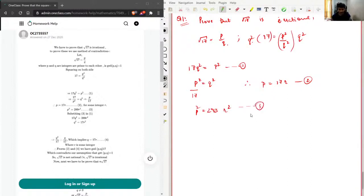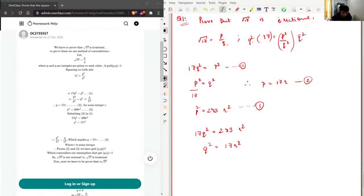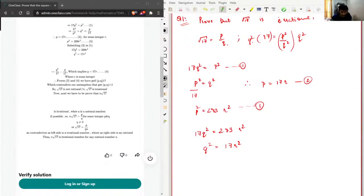This will be equation 3, and therefore we'll substitute this third equation in the first one. So we had 17 Q square equal to P square, which was 289 R square. Now with this, 17 Q square equal to 289 R square, this means Q square equal to 17 R square. So Q square divisible by 17, therefore Q divisible by 17, which implies that Q equal to 17 R for some integer R.